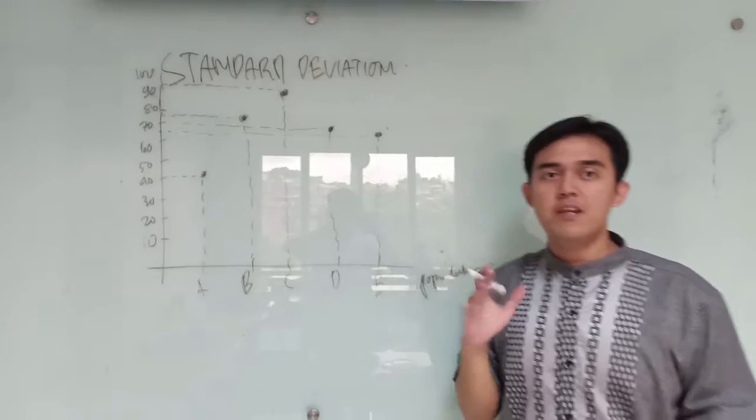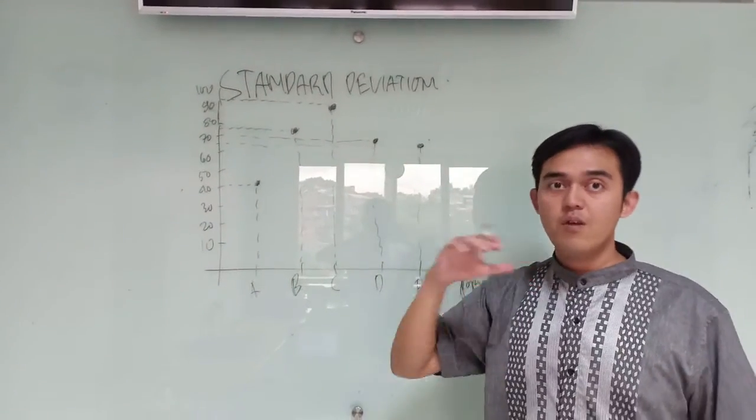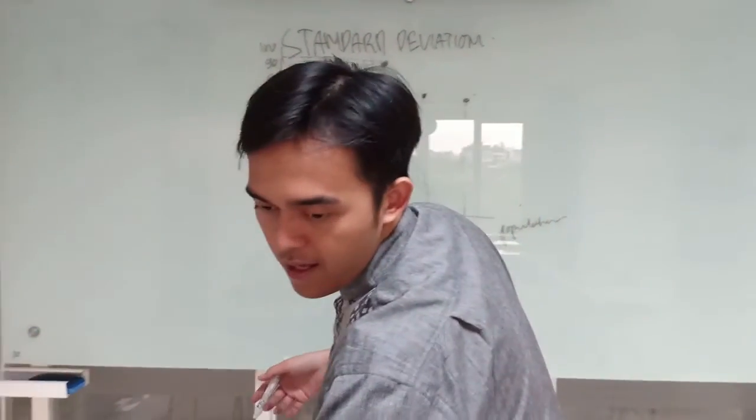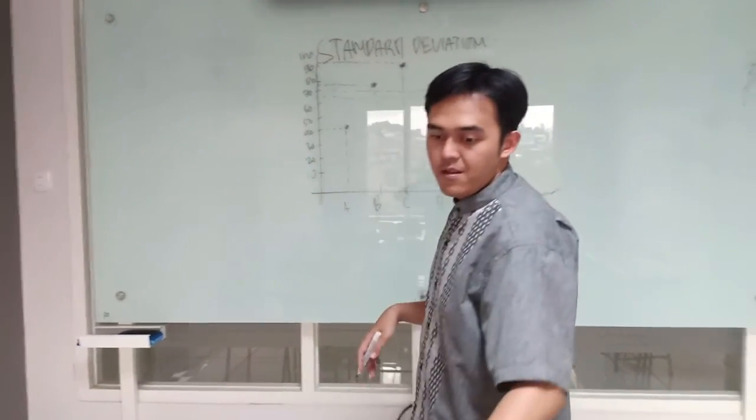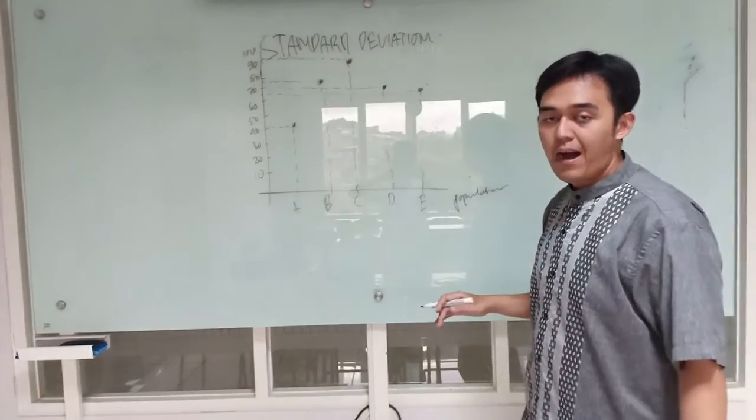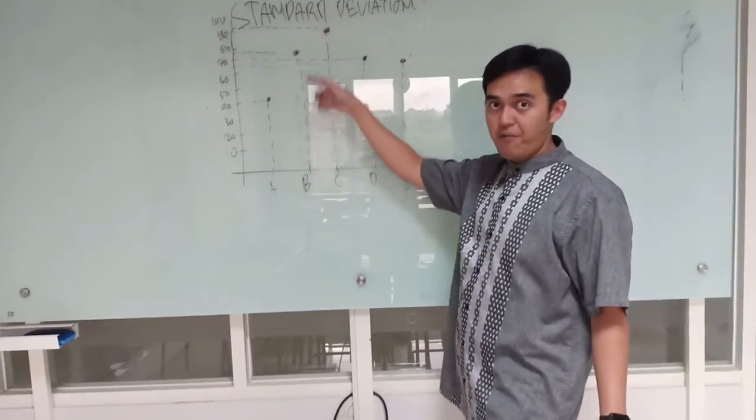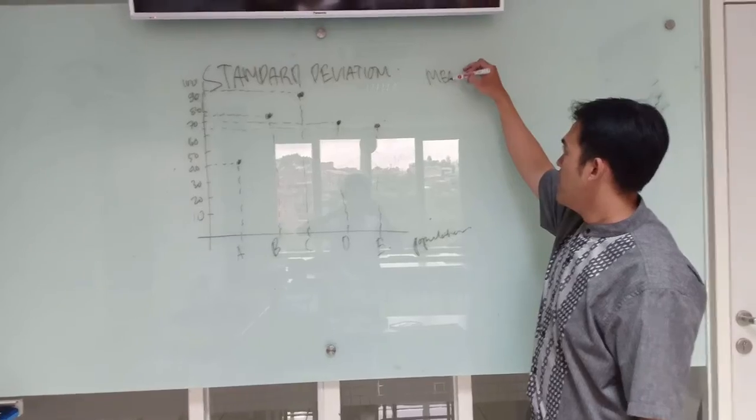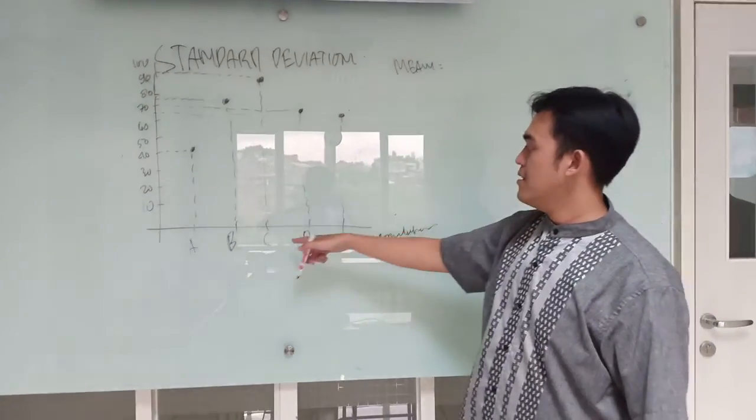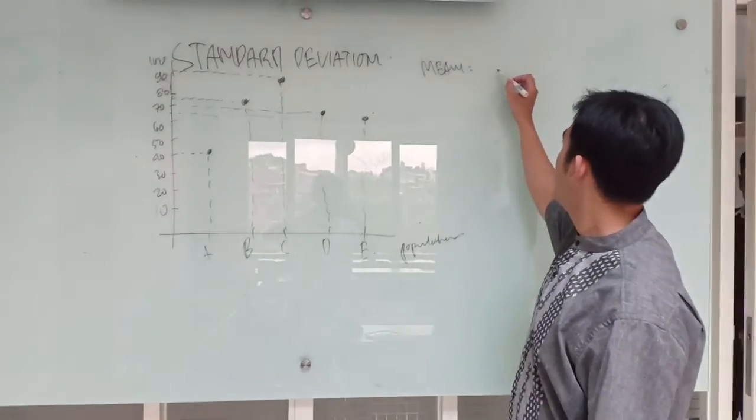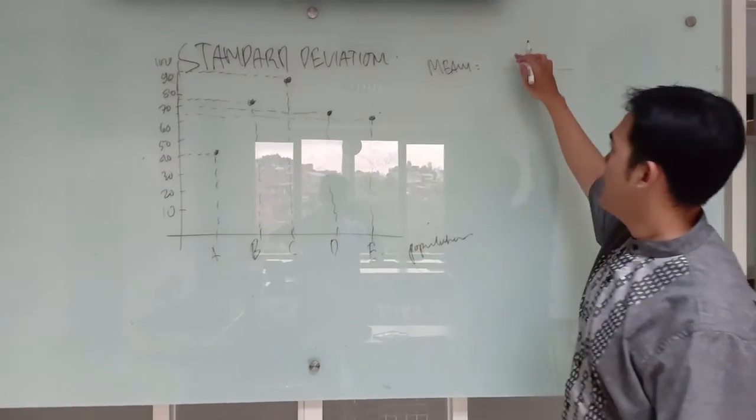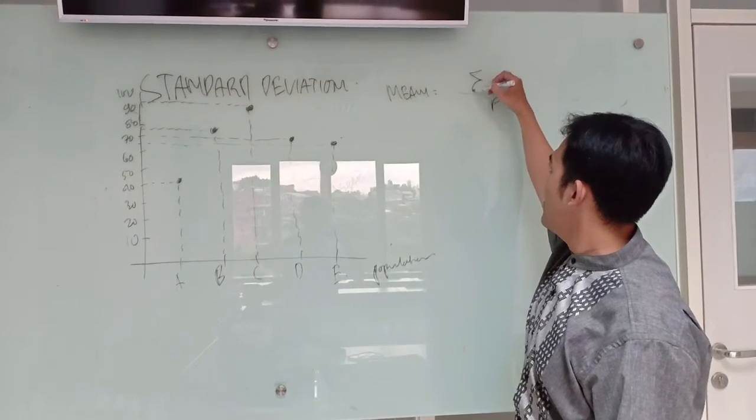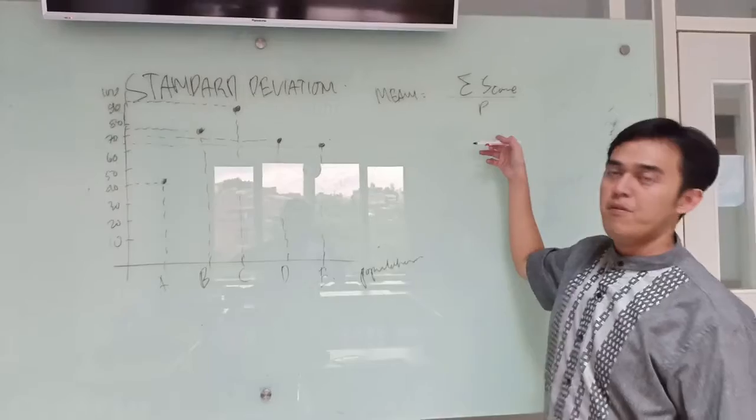Let's talk again what is the meaning of standard equation, standard deviation. Standard deviation means we would like to decide about the mean. How to decide about the mean here? We could get the means by the total of these five students divided into the population. Here, mean. This is the population and divided by the score here. I put the score, the total of the score. The total of the score divided by the population.